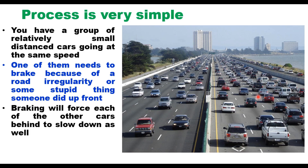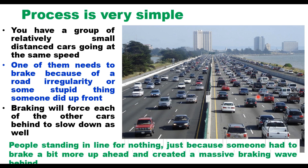After a few seconds, drivers up front will realize there was no reason to brake or go slow, and they will start driving away. Some might even change lanes, thinking there could be an accident somewhere, slowing everything down again and again. This creates a wave that propagates backward, finally leading to a traffic jam — the phantom traffic jam. People are standing in line for nothing, just because someone had to brake a bit more up ahead and created a massive braking wave behind.